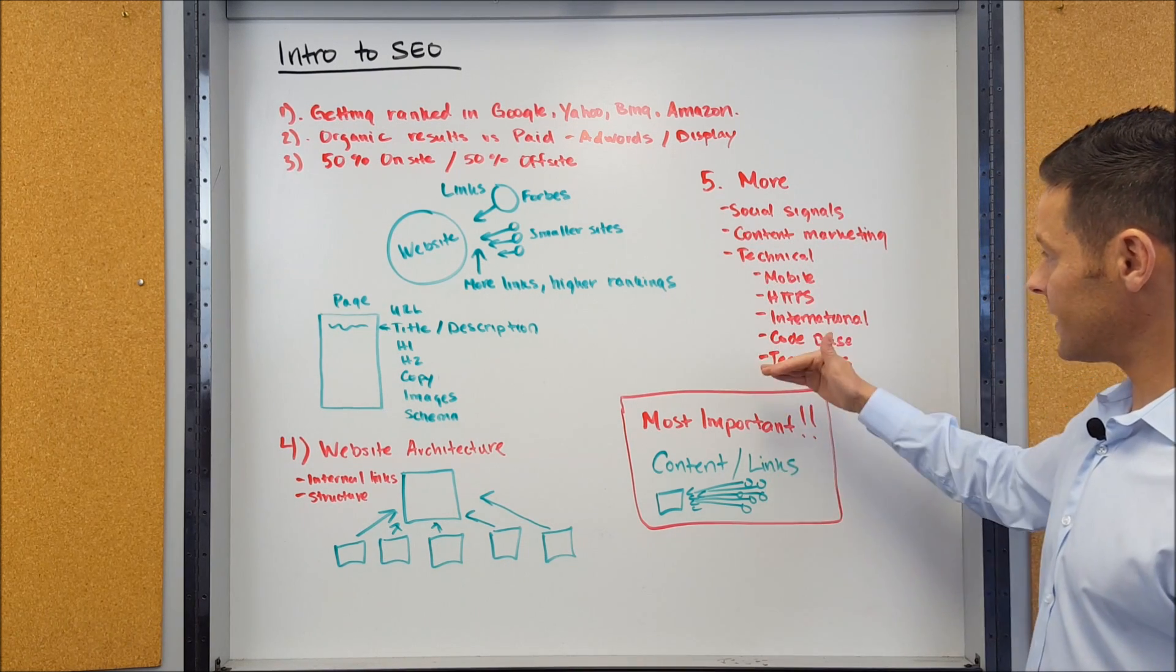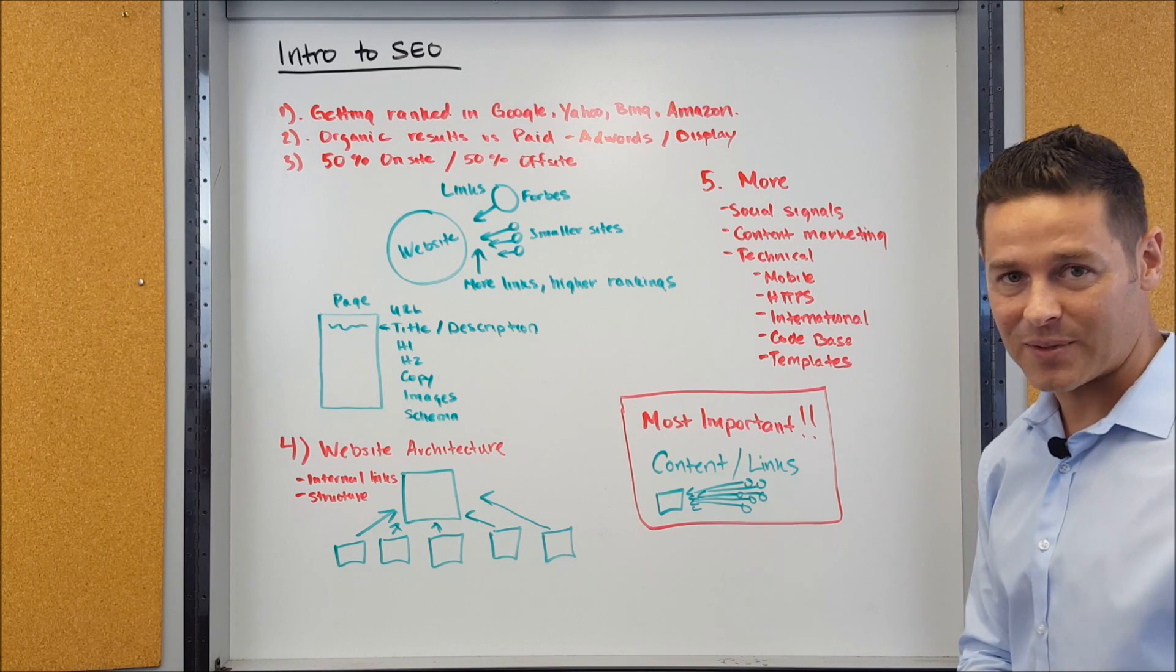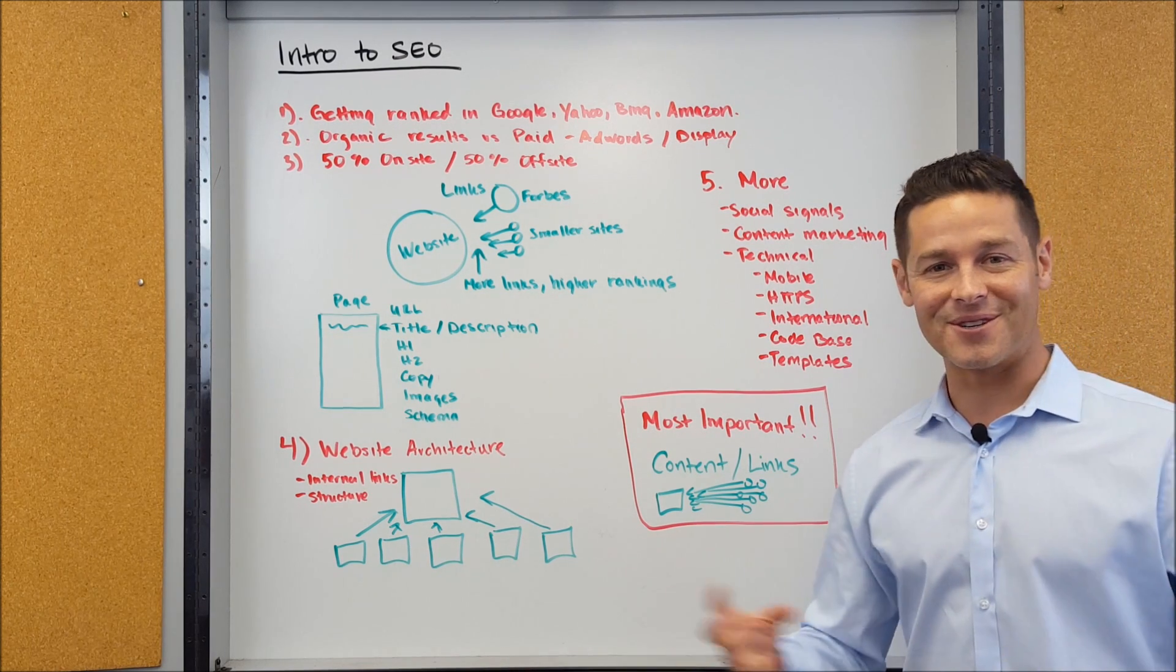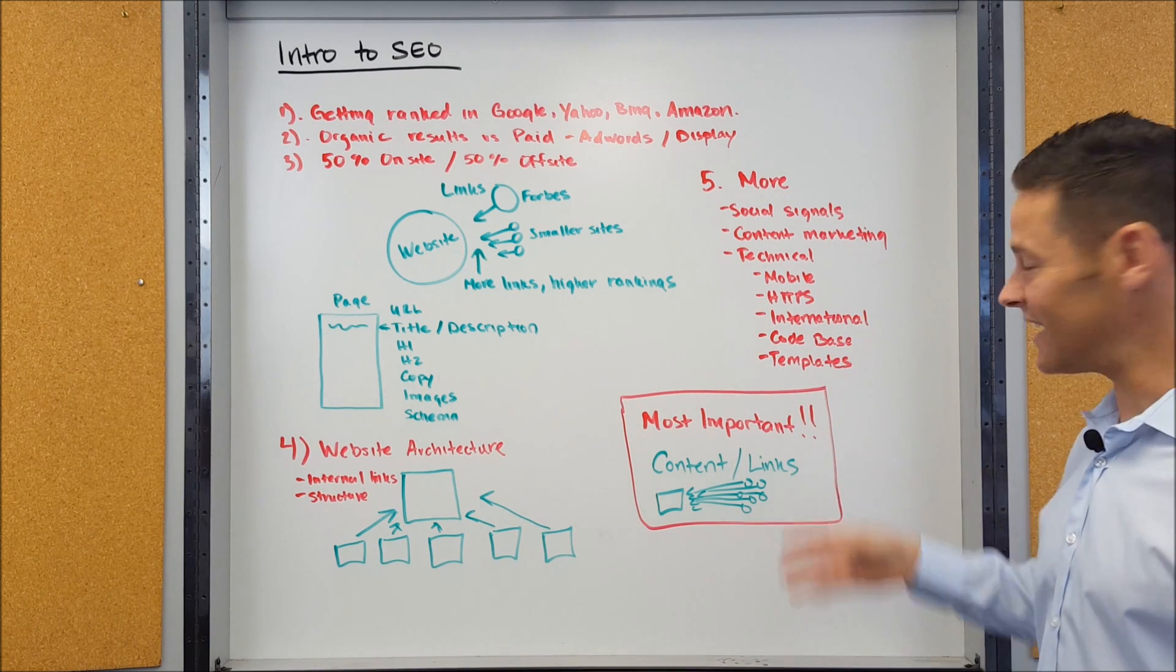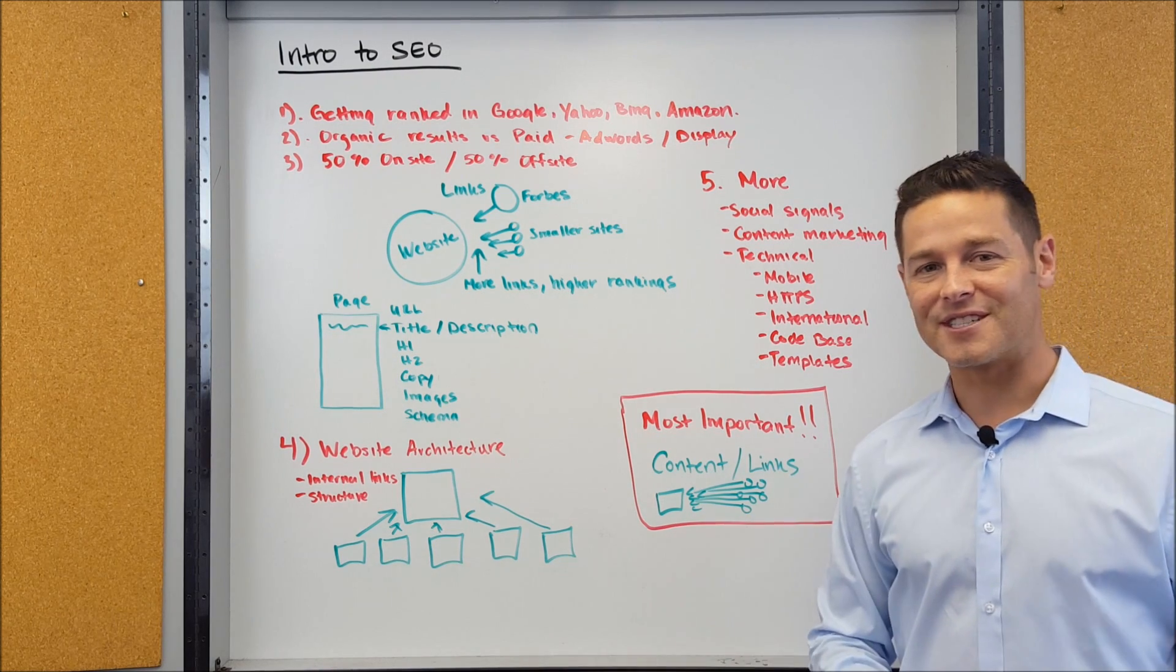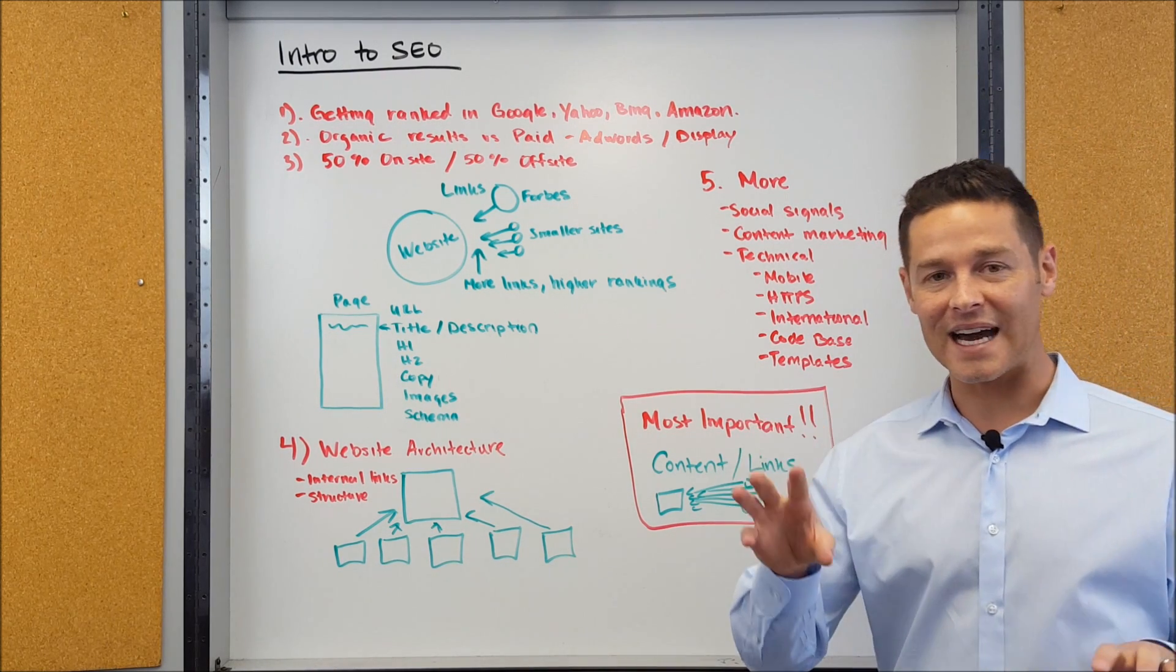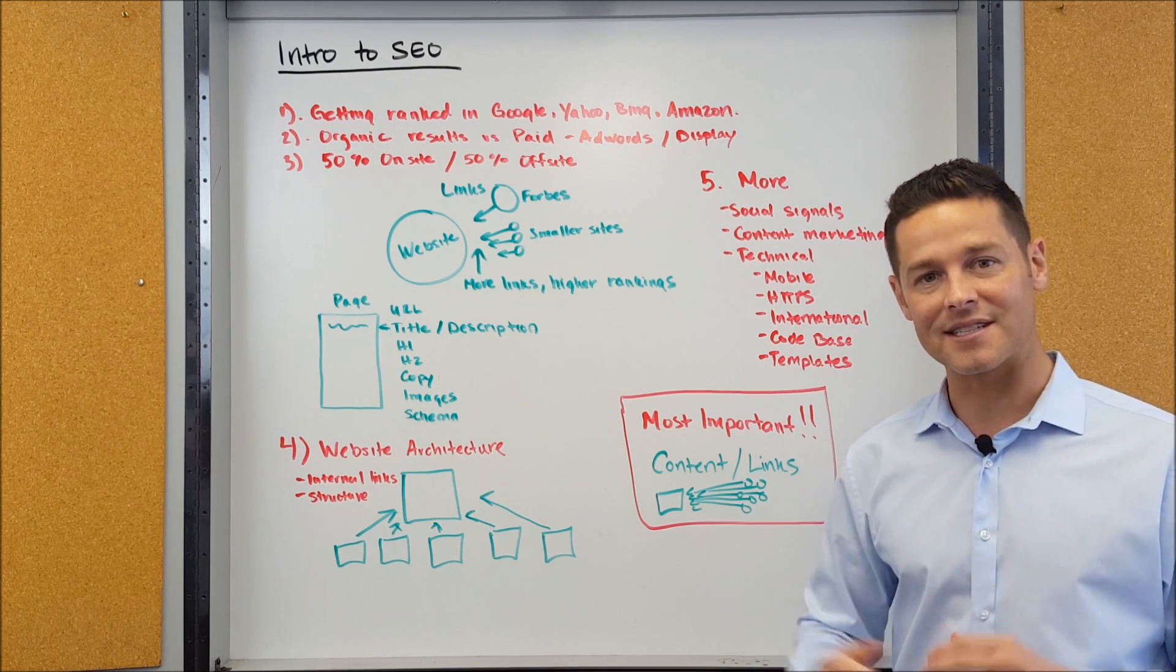Also, there's a lot of technical things such as, is your website mobile ready? Is your website on HTTPS? If you're international and your site's in multiple countries, is your website optimized for that? There's things that you have to do for that. Do you have a good code base? And what do your templates look like? For example, your homepage template, your category template, and your blog template. Those are all different templates. That's how websites are built.